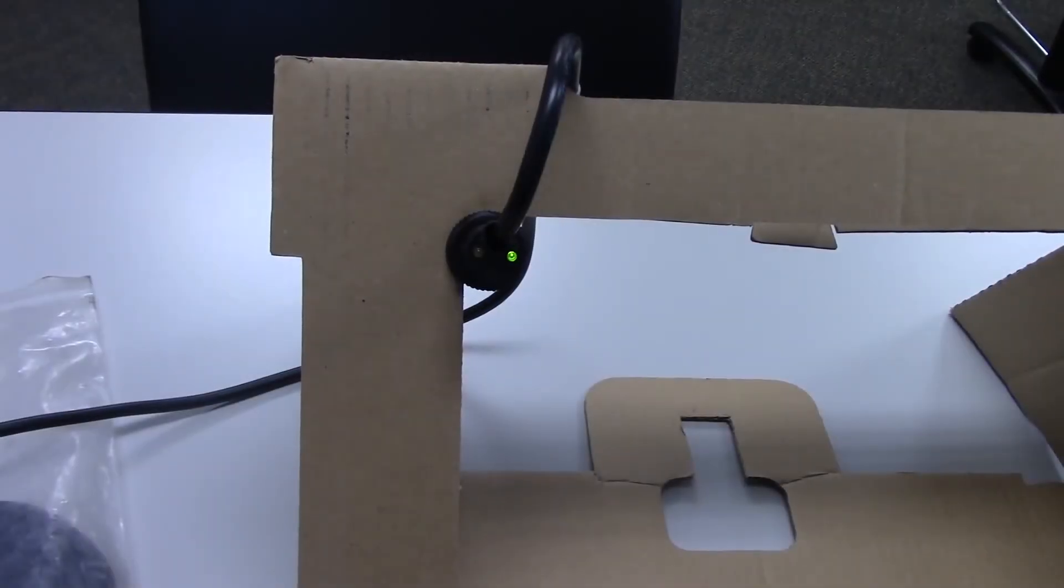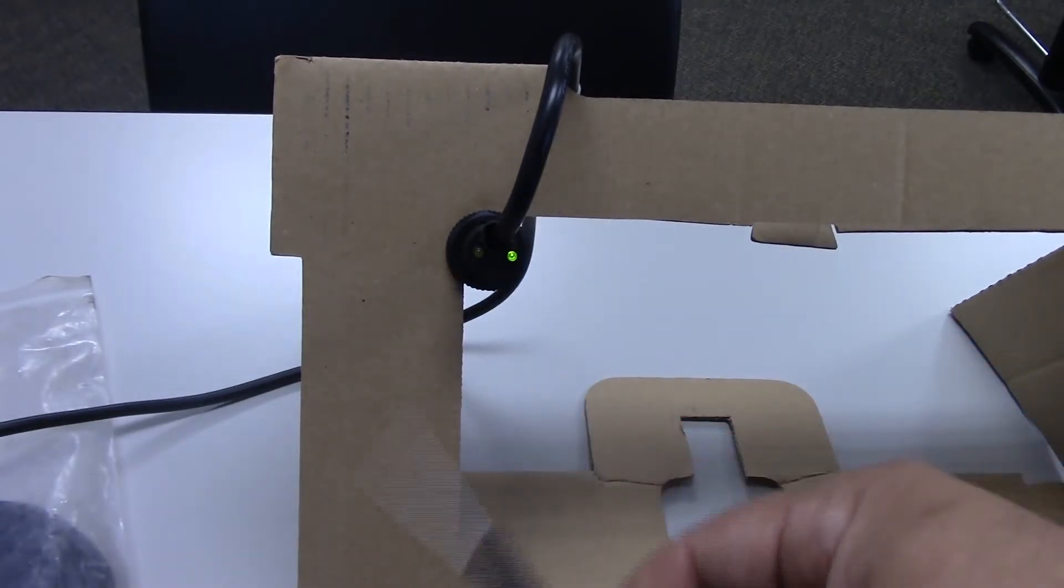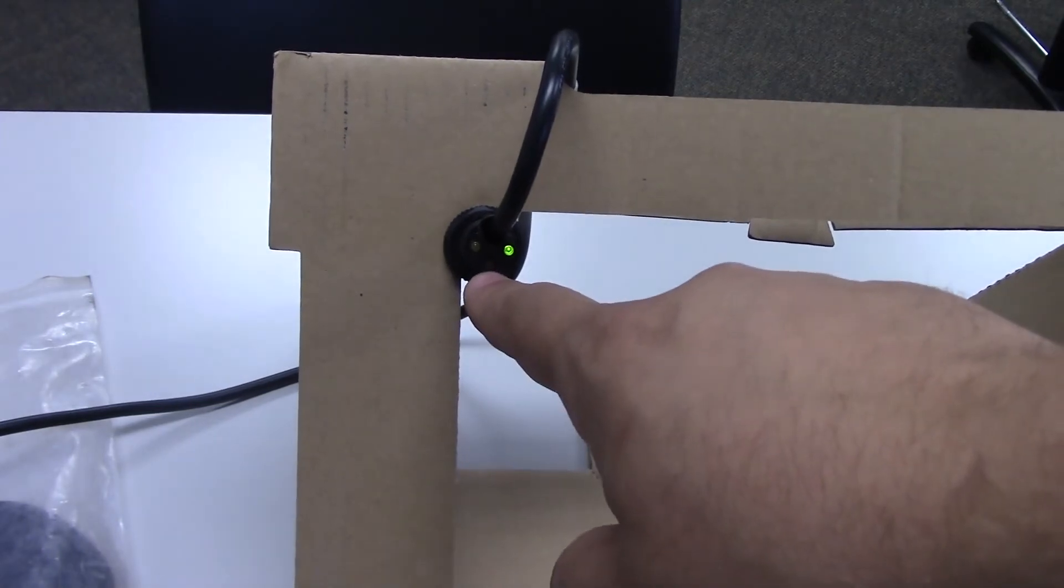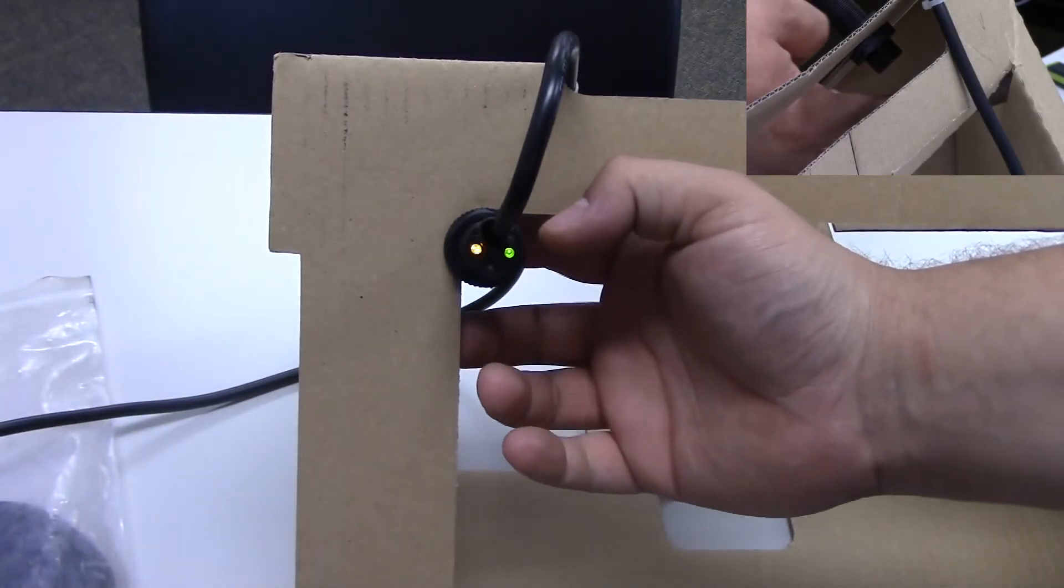Now we're going to adjust this prox sensor. The only thing you'll need to do this is a small flat head screwdriver. With this prox sensor it is actually not sensitive enough so we will be turning this clockwise.